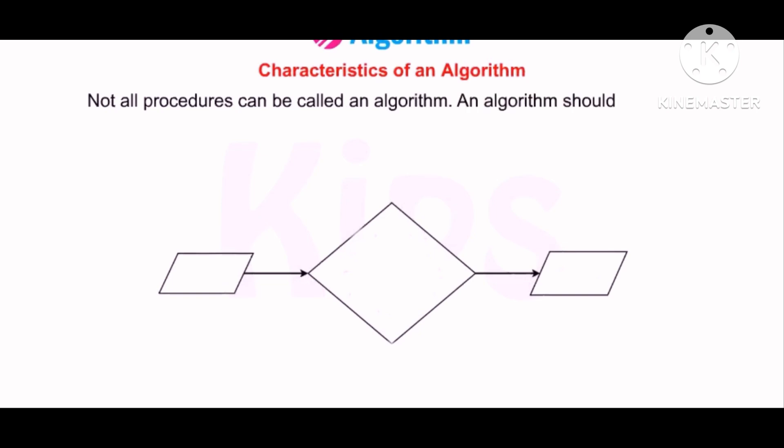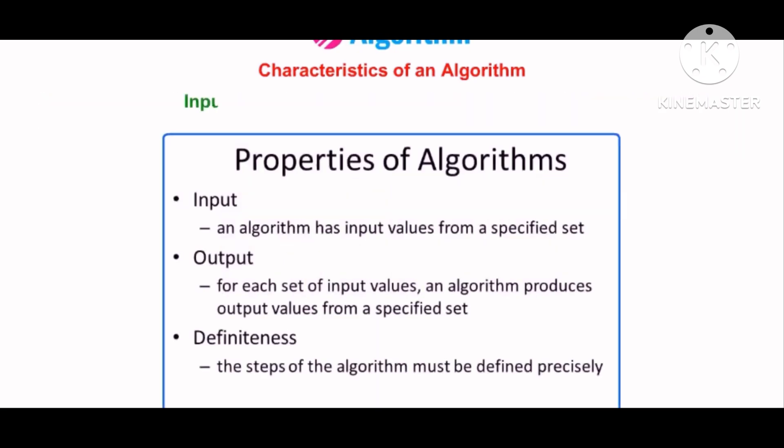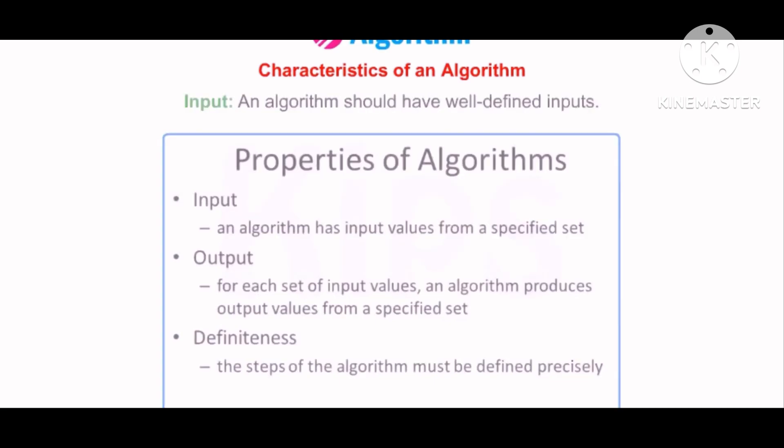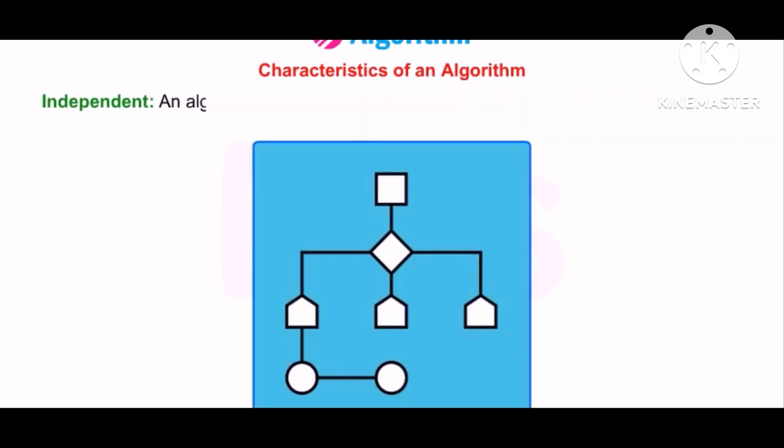An algorithm should have different characteristics as listed on the next page. An algorithm should be clear and explicit. Each of its steps should be clear and must lead to only one meaning. An algorithm should have at least one well-defined output that should match the desired result. Finiteness: An algorithm must terminate after a finite number of steps. Independent: An algorithm should have step-by-step instructions which should be free from any programming code.